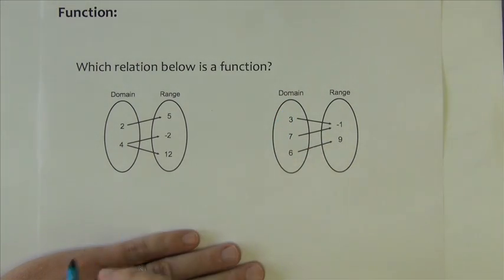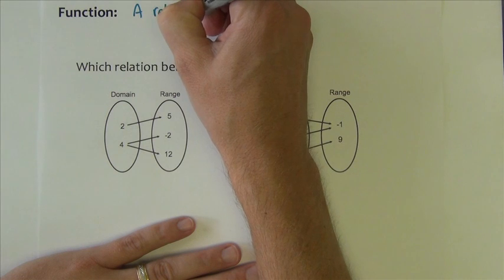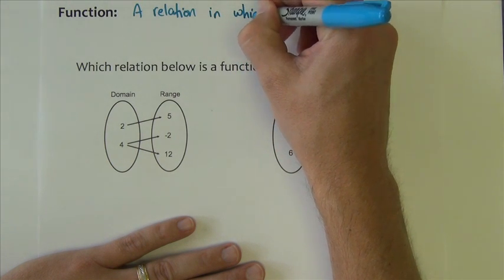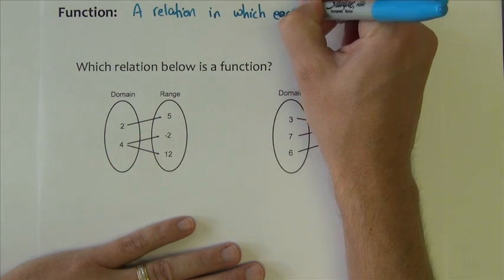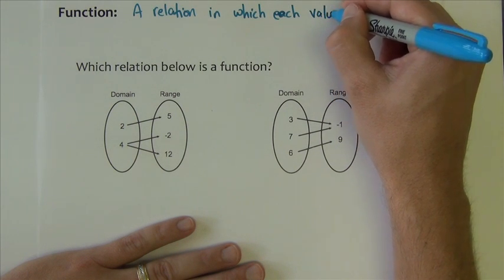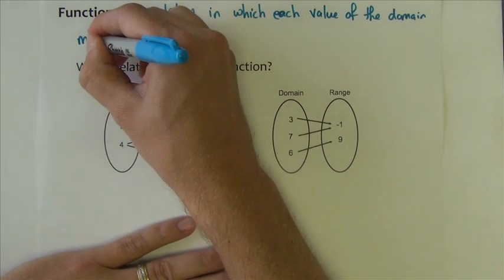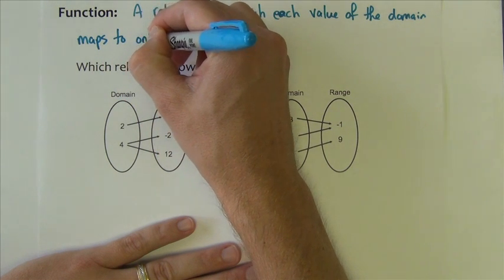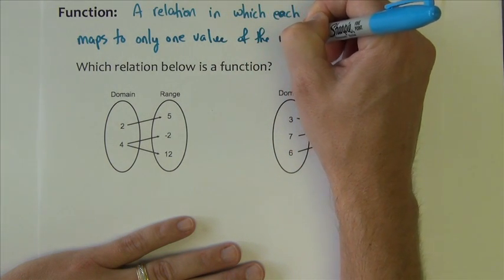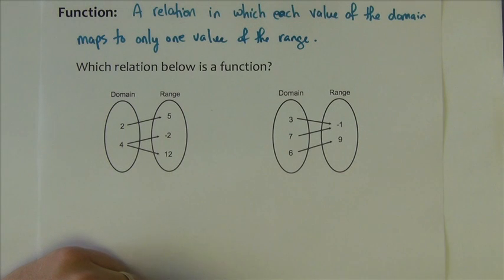So we know what a relation is. A relation just very simply is a set of points. A function is a relation. So again, it's a set of points. It's a relation in which each value of the domain maps to only one value of the range. In other words, each x can have only one y. That's it.